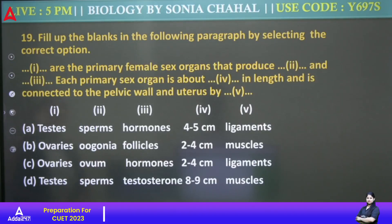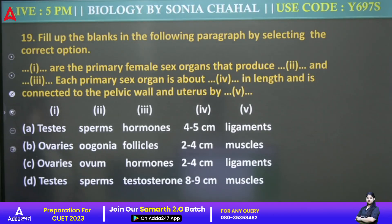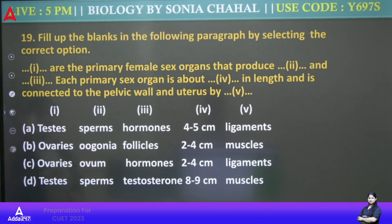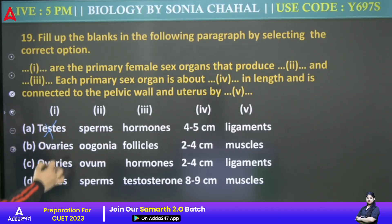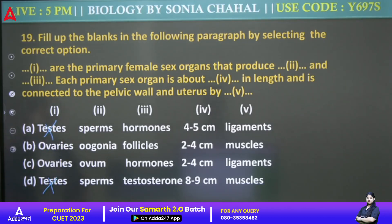Next: Fill up the blanks in the following paragraph by selecting the correct option. Dash are the primary female sex organs — that is ovary. That is ovary, so eliminate the testis option.